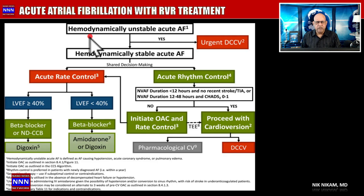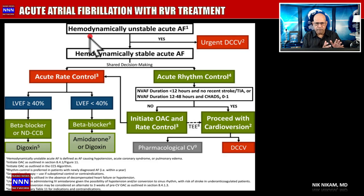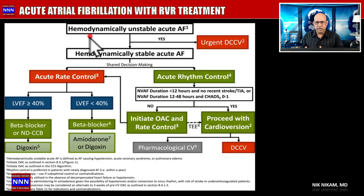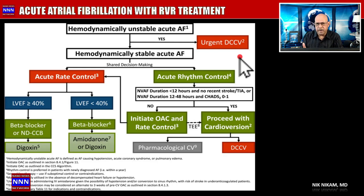First, we have to decide: is this patient hemodynamically stable? A stable patient has adequate blood pressure — maybe 120-130 over 70-80 mmHg — acceptable oxygen saturation, and is not acutely short of breath or profusely sweating. On the other hand, if the patient is hypotensive with blood pressure of 80-90 mmHg, heart rate over 200 bpm, oxygen saturation of 88%, and appears obtunded — you do direct cardioversion. If the patient is unstable, direct cardioversion.